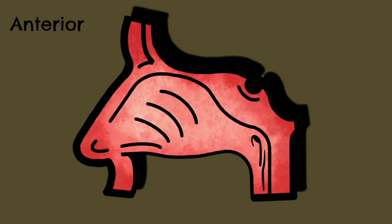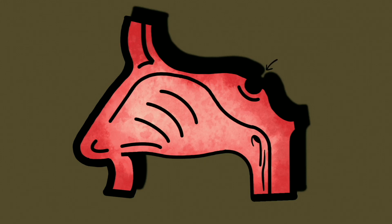On the screen is a side view of the nasal cavity. The left side of the screen represents anterior and the right side represents posterior. At the posterior superior aspect of the nasal cavity we can see the position of the sphenoid sinus. This is one of the four paranasal sinuses and is contained within the sphenoid bone.